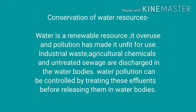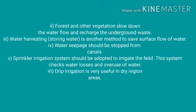Water pollution can be controlled by treating these effluents before releasing them into water bodies. Second point: forests and other vegetation slow down the water flow and recharge the underground water.